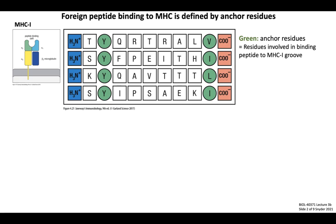The structure of a given MHC molecule determines which amino acids will be defined as anchor residues, as it determines which types of protein-protein interactions will hold peptide and MHC together. The MHC 1 molecule in this example must have a structure that binds to aromatic domains at the peptide's amino terminus, since the aromatic amino acid tyrosine (Y) is a conserved anchor residue there. It must also have a structure attracted to hydrophobic domains at the peptide's carboxy terminus, since the green anchor residues — valine (V), leucine (L), and isoleucine (I) — are all large hydrophobic amino acids.